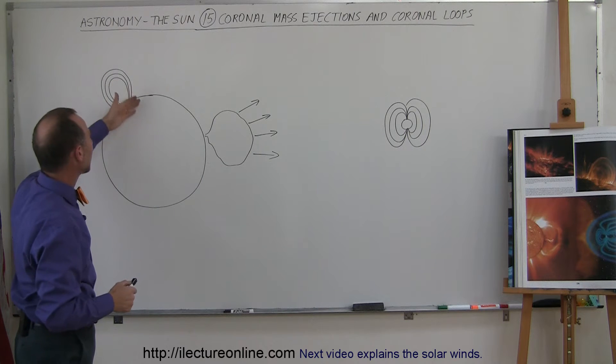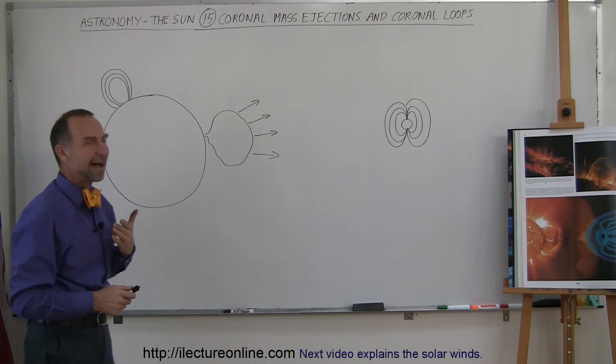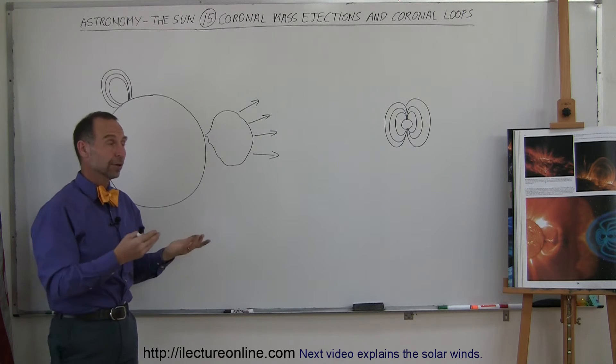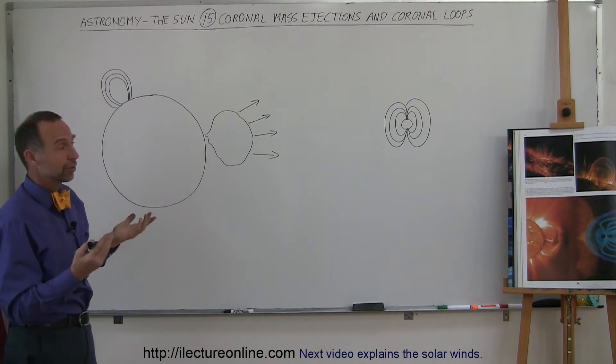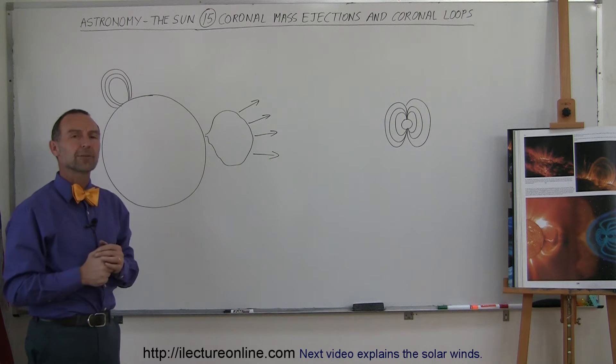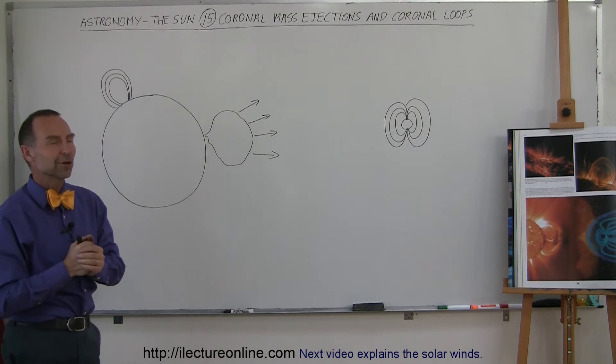So these coronal loops occur during periods of very high solar activity. And they're beautiful things to see. So if you ever want to see this, it's worth your time. Go to the internet, type in coronal loop rain or something like that, and you'll see some amazing videos of this in action.